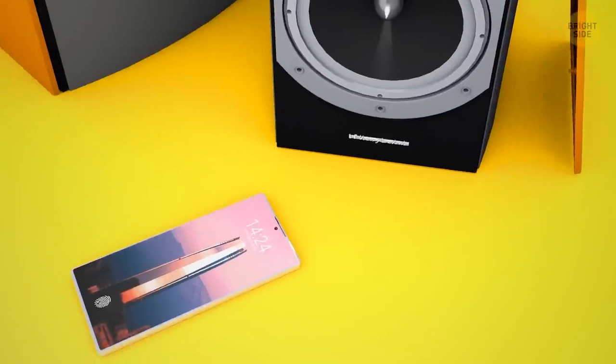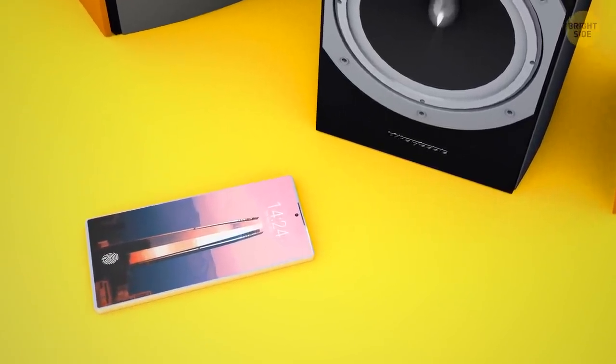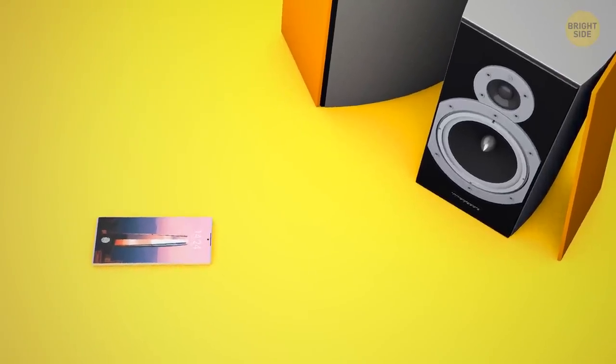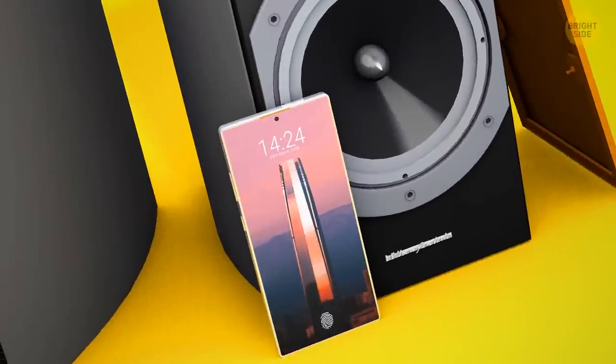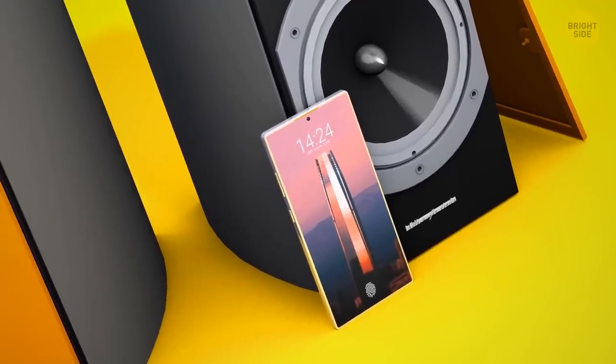A simple way to protect the amazing vibe your speaker is creating for you from this irritating buzzing noise is just to move your phone away from your speaker, or vice versa. This will eliminate what is officially known as electromagnetic interference.